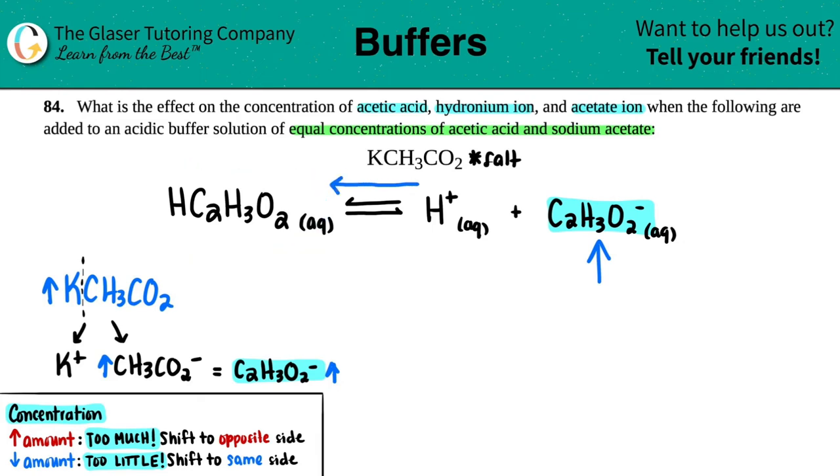So we already answered one question here. We know that the C2H3O2- concentration, that's the acetate ion, that's going to increase. But now we just have to figure out what's going to happen with the HC2H3O2, that's the acetic acid, and the H+.